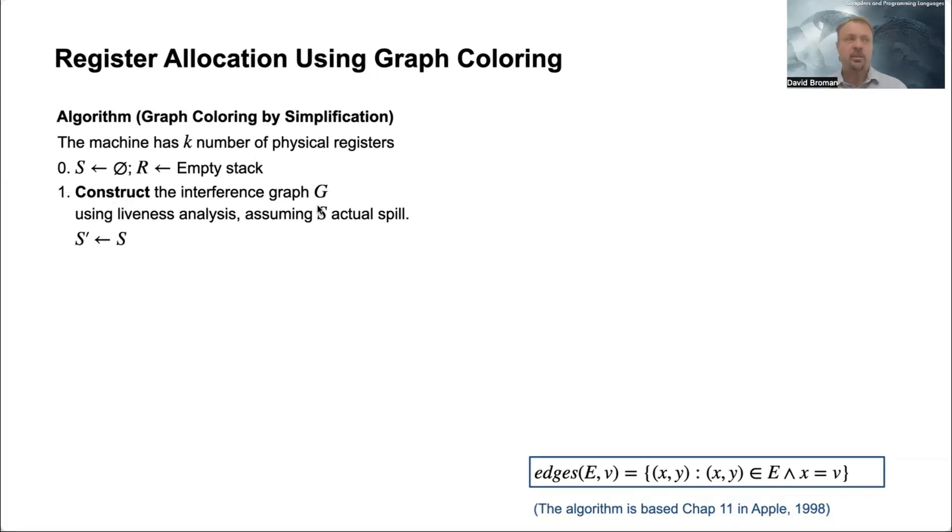So the first step here is the construction phase. We are basically constructing the graph G using liveness analysis - this is basically the previous video. And then also we save this spill set.